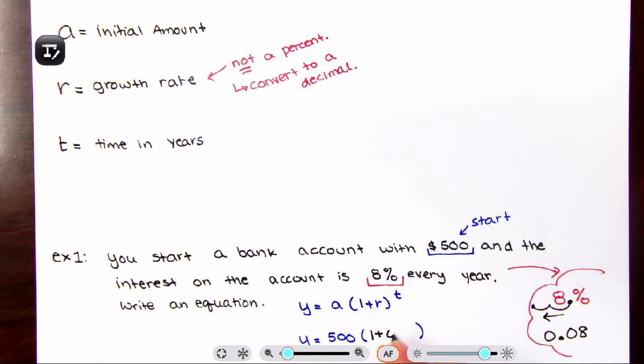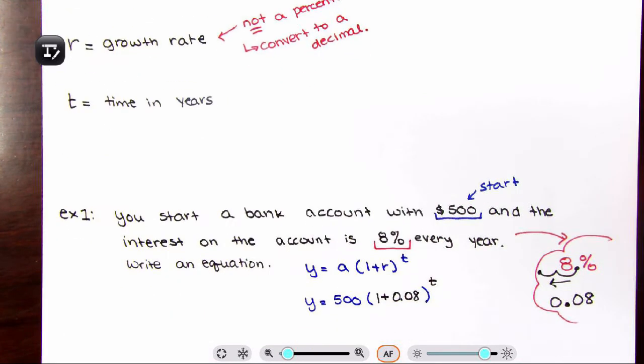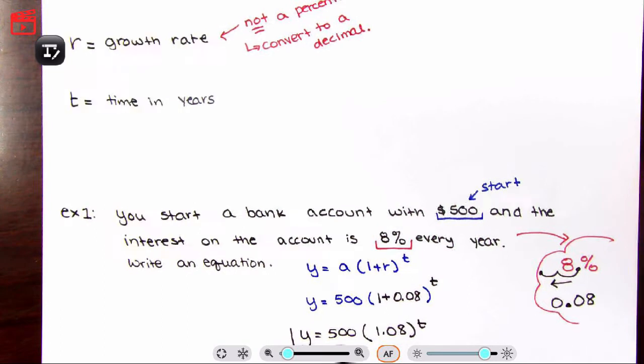And my T is every year. Now because we don't have the actual year, we don't know how many years, it's just going to be T or your variable. We just need to simplify. Y equals 500 times 1.08 to the T power. And you are done. That's your equation.